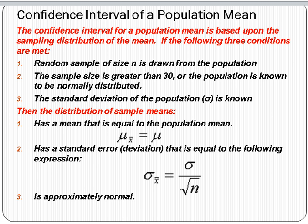A little review of the confidence interval for a population mean. Confidence intervals for the mean and for proportions are based upon the sampling distribution of the mean. If three conditions are met: a random sample is drawn from the population; the sample size is greater than 30 or the population is known to be normally distributed; and the standard deviation of the population is known — then we know some things about the distribution of sample means, called the sampling distribution.